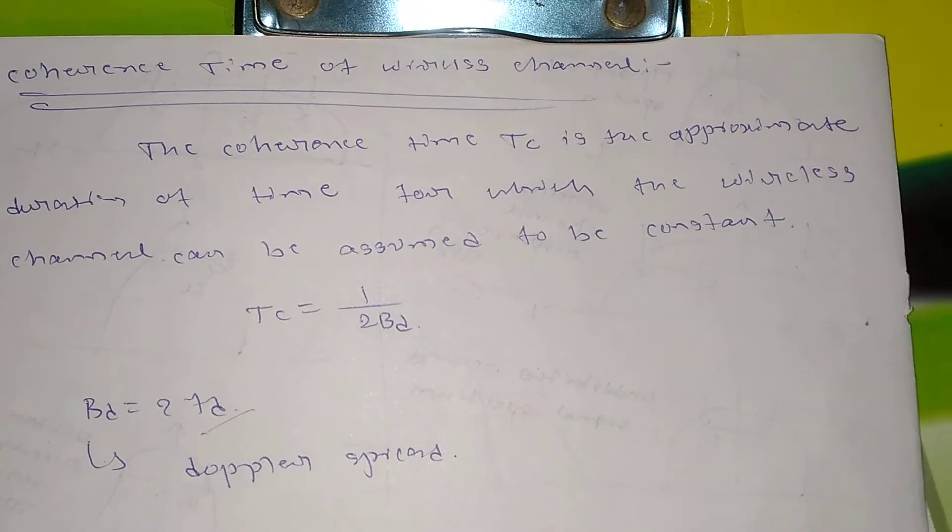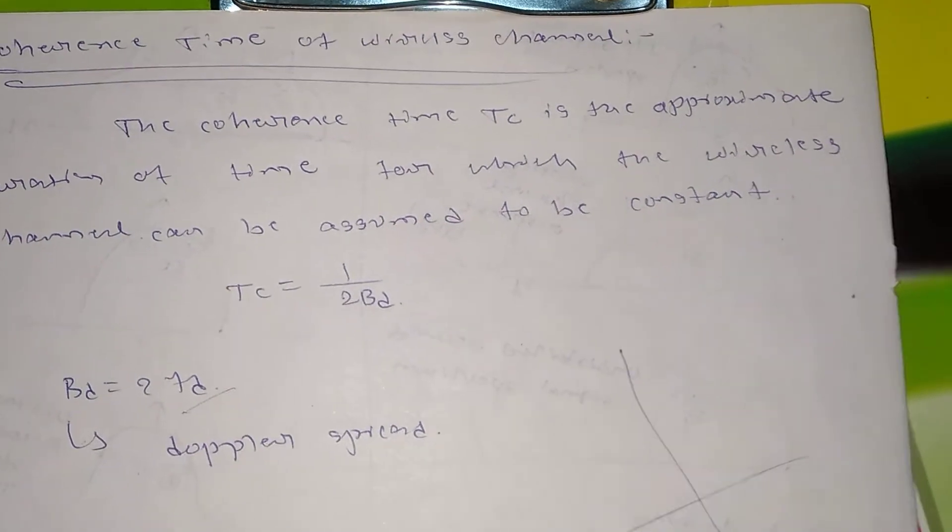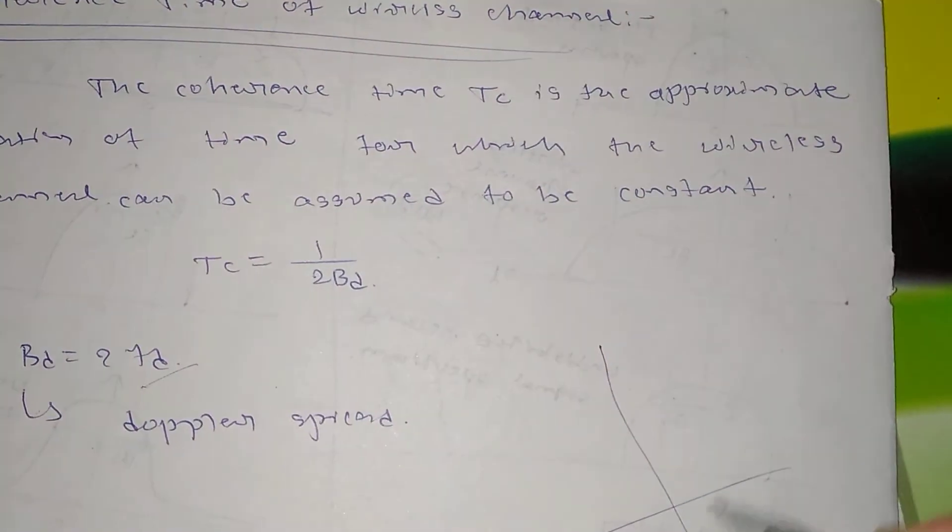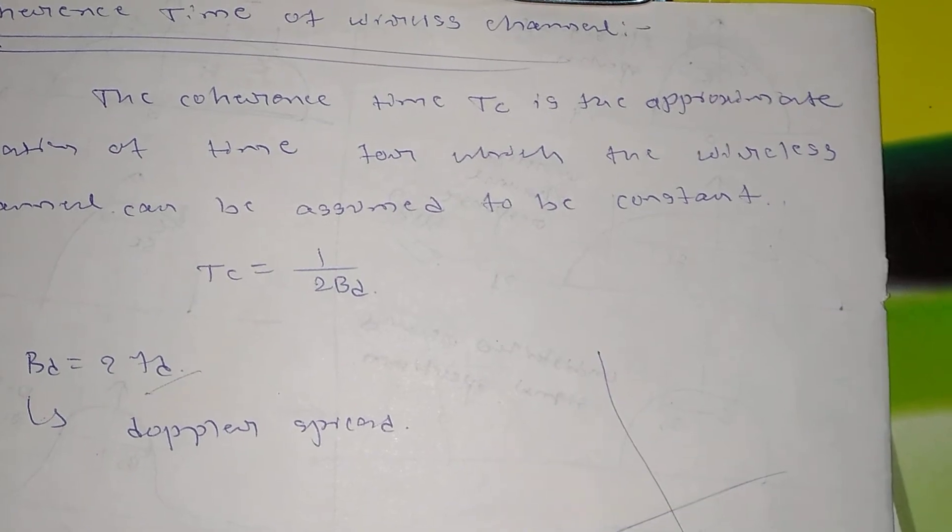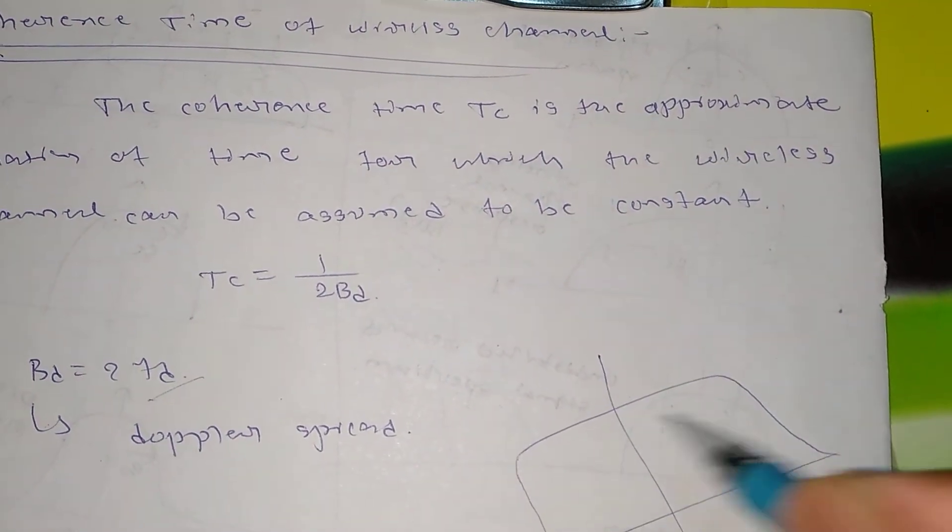The coherence time Tc is the approximate duration of time for which the wireless channel can be assumed to be constant. So coherence time is something where the channel can be, if it is, let us say this is the response of a channel, it is something like this.